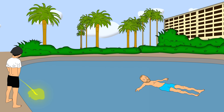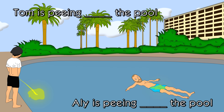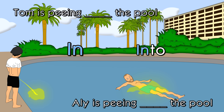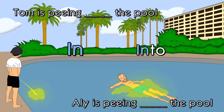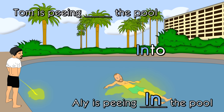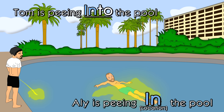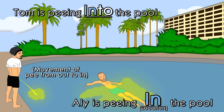Here's your test. Ali and Tom are peeing, but where are they peeing? One of them is peeing in the pool. One of them is peeing into the pool. Did you guess correctly? Ali is peeing in the pool because that's his location — he is in the pool. Tom is peeing into the pool because his pee is going from out to in the pool.